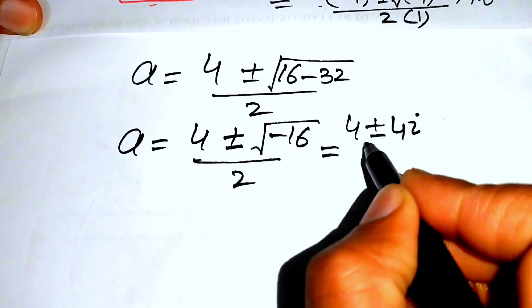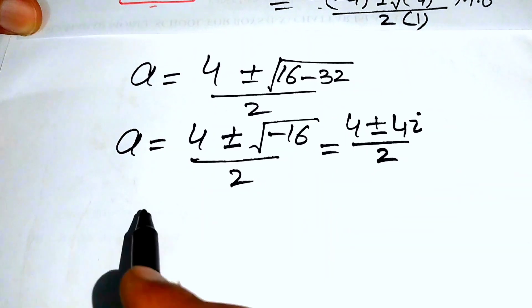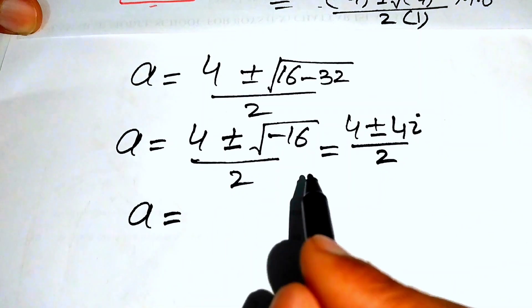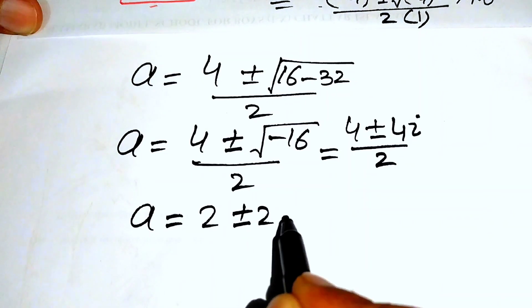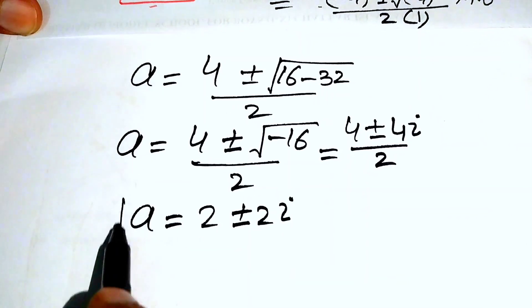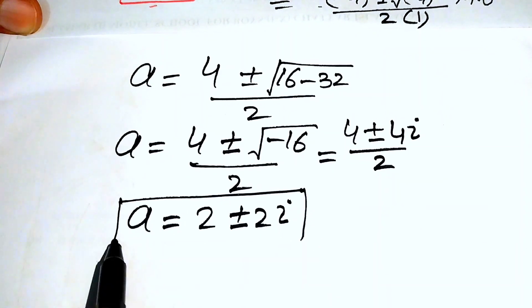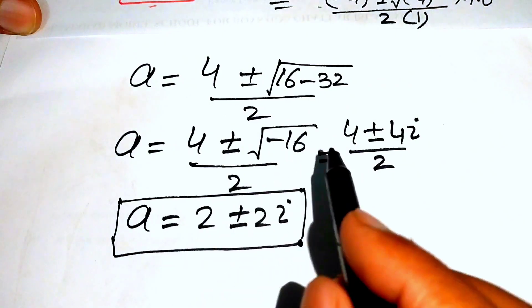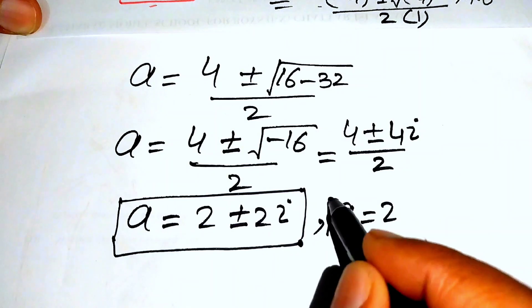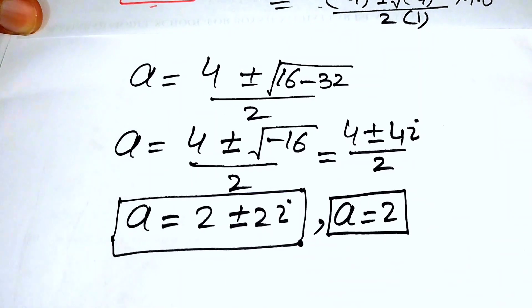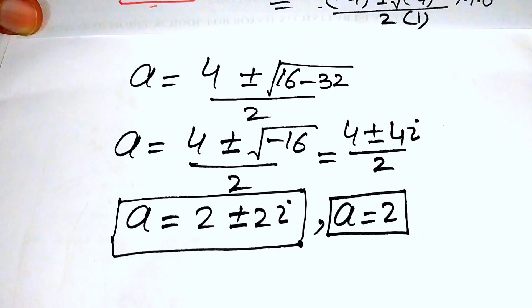We get √16 = 4, so a = (4 ± 4i) / 2 = 2 ± 2i. These are the two complex roots of the equation. Combined with the real root a = 2, this is our final answer. Thank you for watching — please subscribe for more videos.